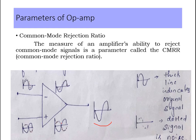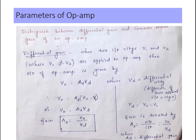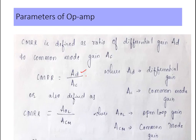This is the common mode parameter. Common mode rejection ratio measures the ability to reject common mode signals, making it useful for eliminating noise. CMRR is defined as the ratio of differential gain to common mode gain — that is, CMRR = AD / AC, or equivalently, open loop gain divided by common mode gain. Let us now distinguish between differential gain and common mode gain.